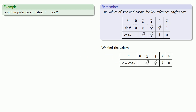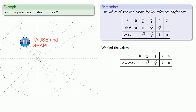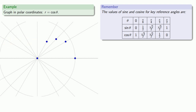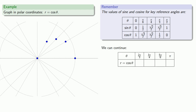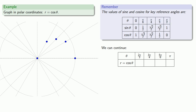We'll plot these points. Now at this point we've only gone partway around the pole, so we do want to continue. We'll pick a few more values of theta for which we know the sine and cosine — values whose reference angle equals one of our key angles — and find the corresponding values for r equals cosine theta.